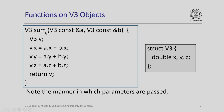Here is how a function that computes the vector sum of two vectors a and b might look like. Note that the two vectors are passed by reference and they are not going to be changed by the function, so they are passed using the keyword const. We simply add the x, y, and z coordinates of the two input vectors, store the result in a vector V of type V3, and return it.